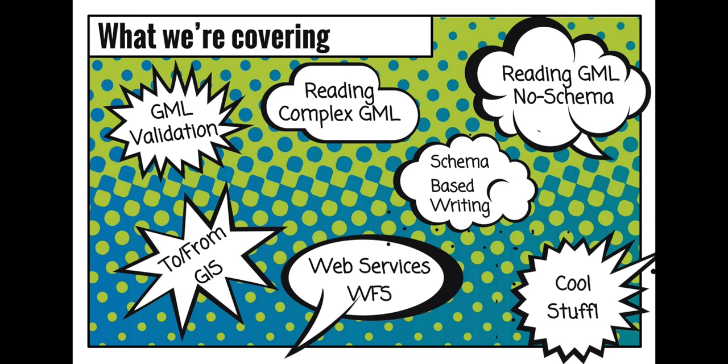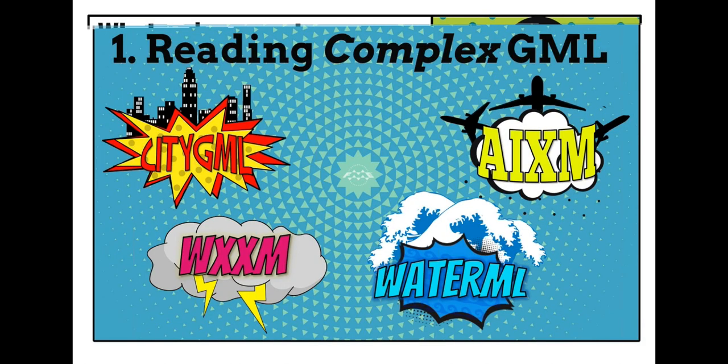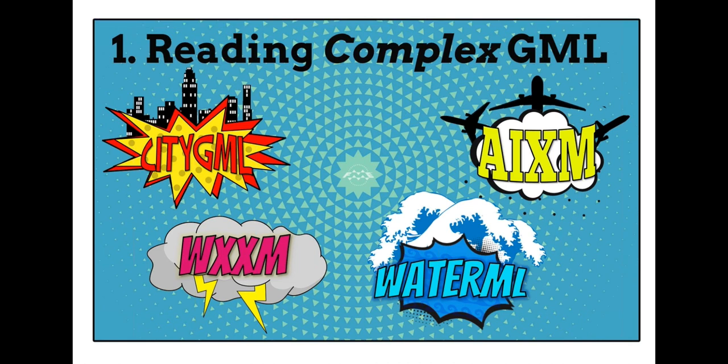Here are some of the formats we support — some of the big ones out there, including German NAS, which is pretty complicated, CityGML, WaterML, AIXM, and WiXOM. There are many more that we just read without even thinking about it. Today we're covering: reading complex or any GML, reading GML with no schema, GML validation, conversion to and from GIS or databases, web services, and some cool new upcoming features.